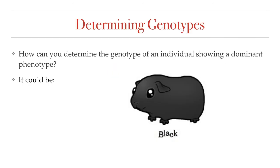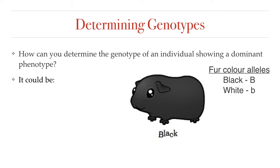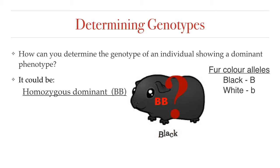Mendel also came up with a way to figure out whether an organism with a dominant phenotype had a heterozygous genotype or a homozygous dominant genotype. For example, let's say that fur color in guinea pigs is controlled by a single gene that follows the Mendelian rules of inheritance we just learned. There are two alleles for fur color: the black fur color variant, which is dominant, and the white fur color variant, which is recessive. So if you have a black guinea pig as a pet — let's call him Bob — you can't be sure of Bob's genotype, because both the homozygous dominant and the heterozygous genotypes produce black fur.